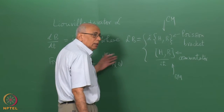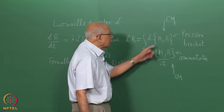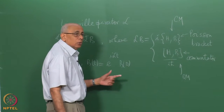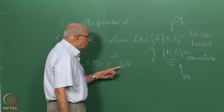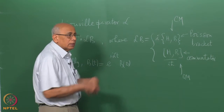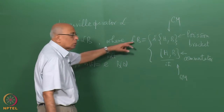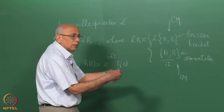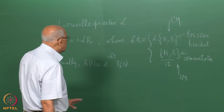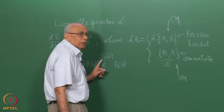In quantum mechanics, the time evolution is e^{iHt} acting on B(0) with e^{-iHt} on either side. In classical mechanics it means you solve the Hamilton equations of motion and then you have B of Q(t) and P(t) inside the argument. We will find it convenient to use this notation; the formal expression for the time development operator is very useful.